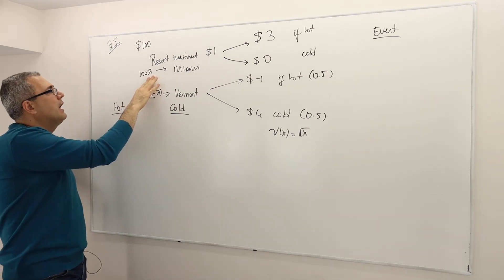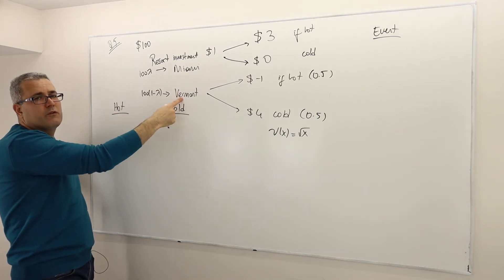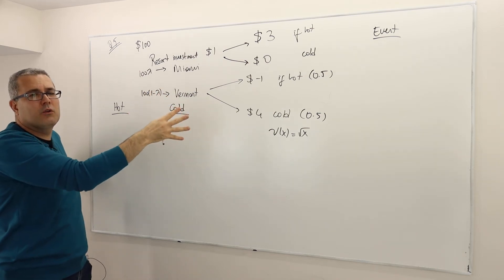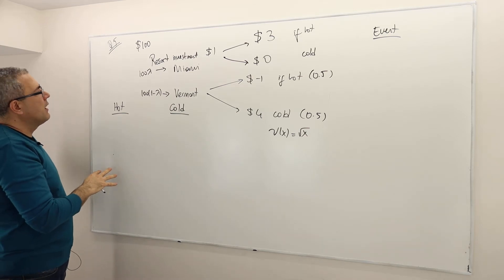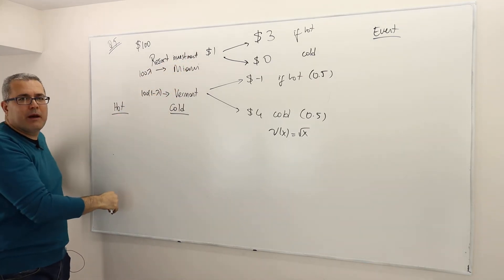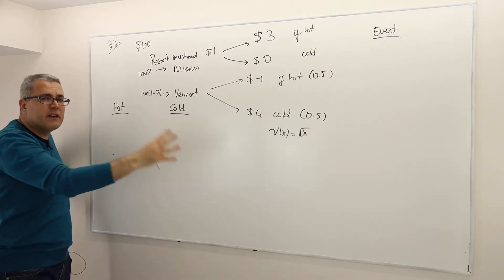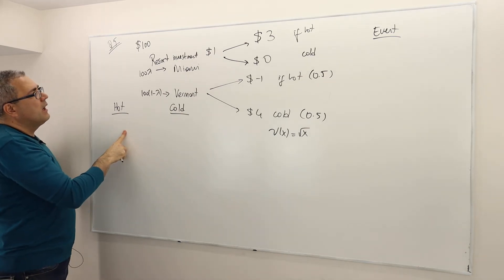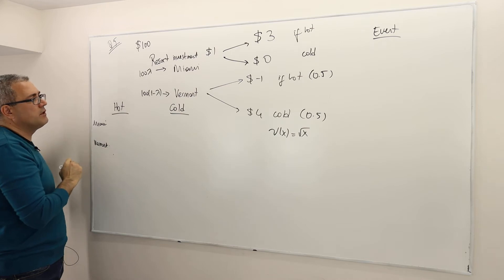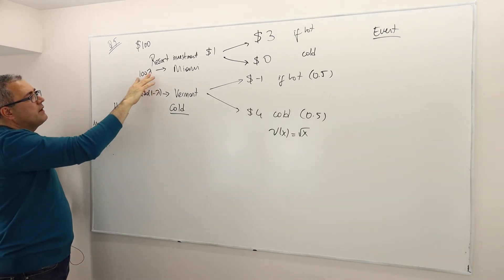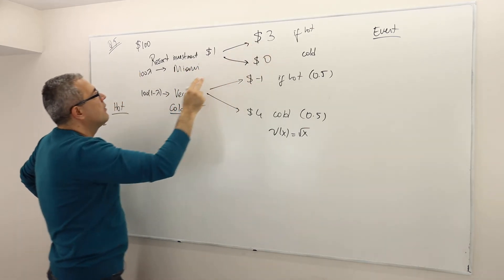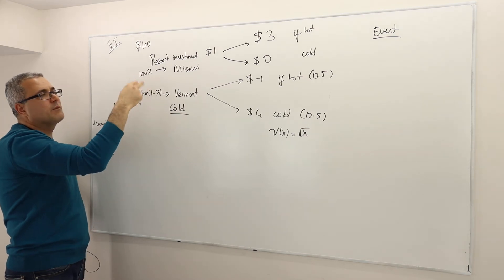For example, if lambda is 1/2, he invests $50 in Miami and $50 in Vermont. If lambda is 1/4, it's $25 in Miami and $75 in Vermont. I'll write the realized final wealth for each resort per event and then add them up.